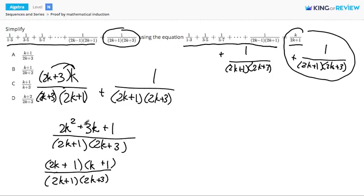Let's check to make sure the 3k works as well. 1 times k is k, 2k times 1 is 2k, and 1k plus 2k gives us 3k.